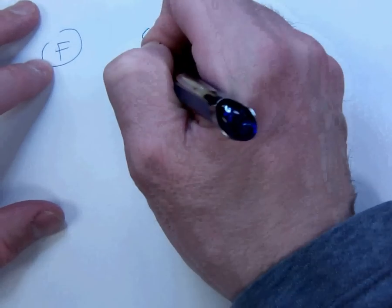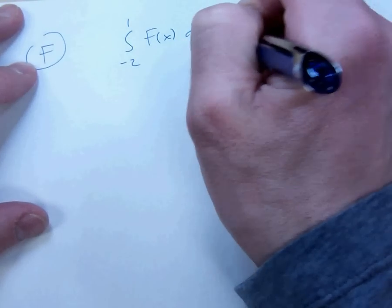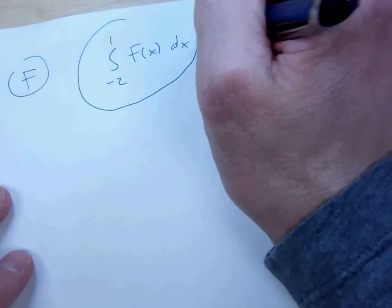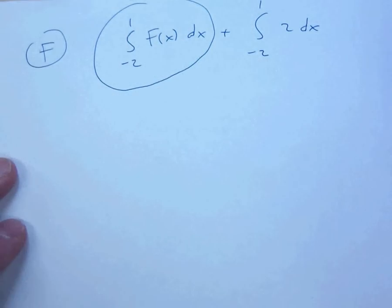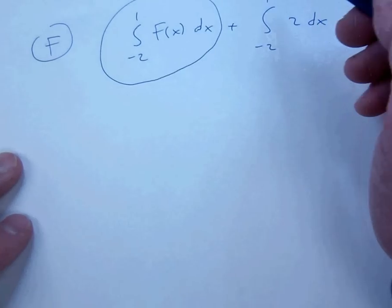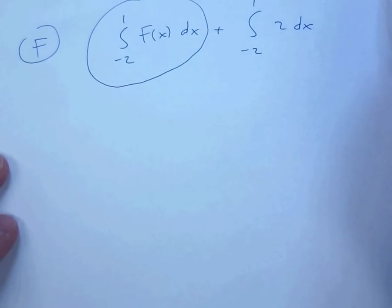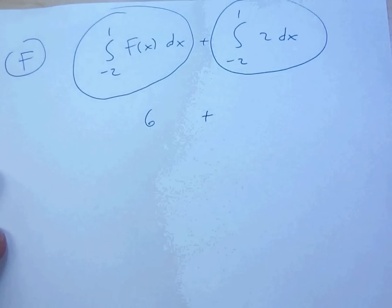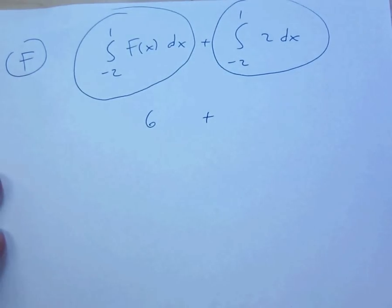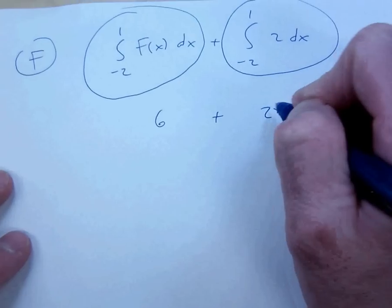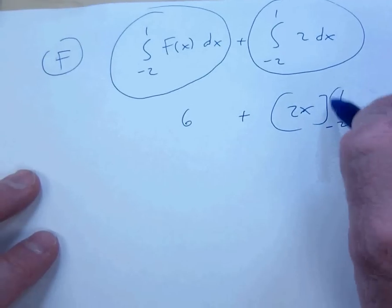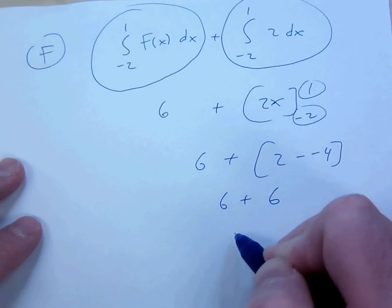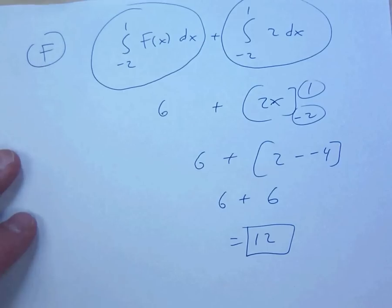Part F is kind of tricky. What you want to do is split it up. The area between F and the x-axis from negative 2 to 1 is just 6. And then this is a very easy integral — the antiderivative of 2dx is 2x. You put in the upper limit and subtract what you get when you put in the lower limit, and you get 12.